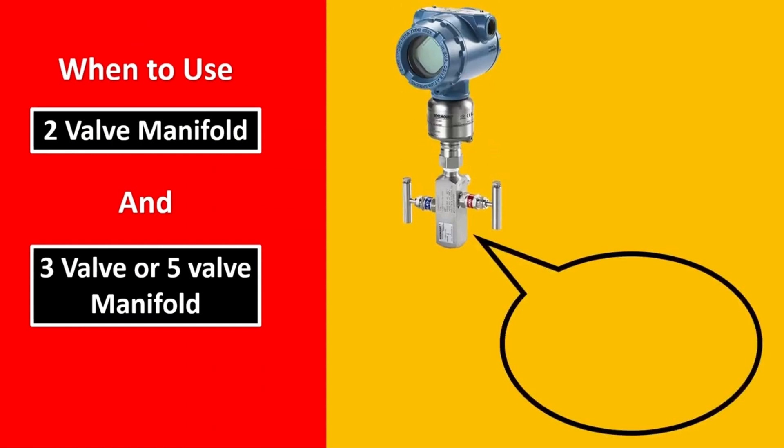Remember that for a transmitter, 2 valve manifold is very simple. You have 2 valves to it, one is going to be your isolation valve, the other is going to be your vent and drain valve. This is how it looks in the real world and this is the diagrammatic representation that you can draw.